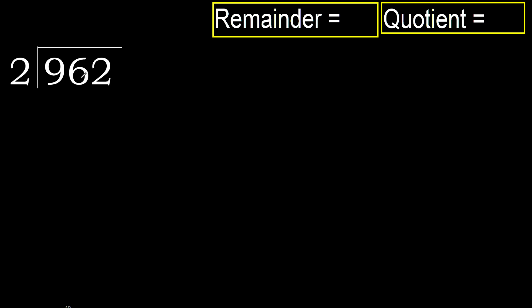962 divided by 2. 9 is not less, therefore start with 9. 2 multiplied by which number is nearest to 9 but not greater?